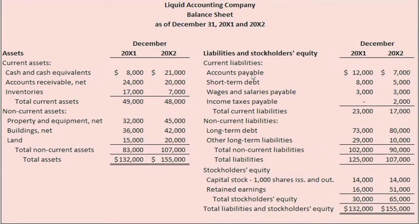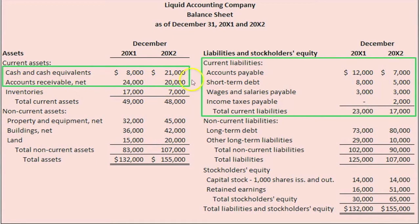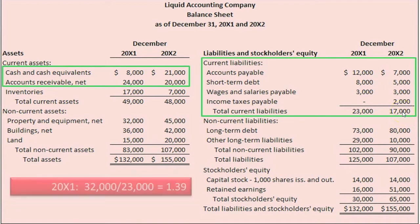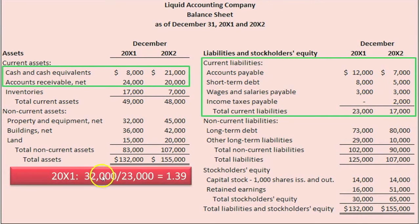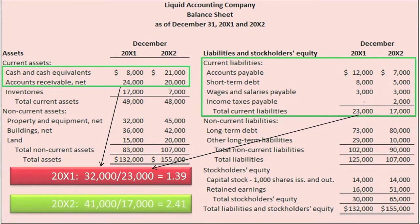Let's compute LAC's Quick Ratios for 20x1 and 20x2. We've only highlighted the most liquid current assets, leaving out inventory, and we have all current liabilities. For 20x1, the computation is $32,000 of most liquid current assets divided by $23,000 of current liabilities. For 20x2, it's $41,000 divided by $17,000.